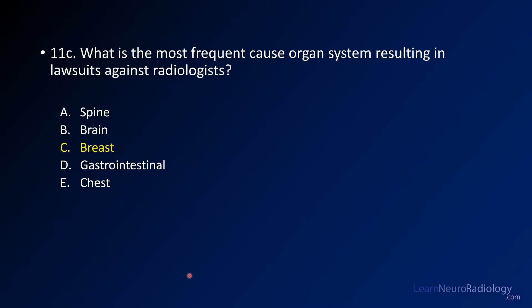The most frequent organ system is breast, and that's easy to imagine as well. Mammography records stay around for a long time. People get it frequently, so many times when a patient has breast cancer, ultimately it's going to be seen on some of the prior studies — so that is a bit of a problem.